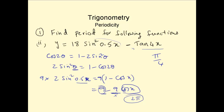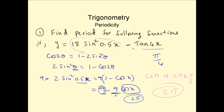Now we need to find the LCM of π/4 and 2π. The LCM of 2π and π/4 is 2π. So the period for this whole function is equal to 2π, meaning at every 2π radians or 360 degrees, this function repeats itself — it's periodic.